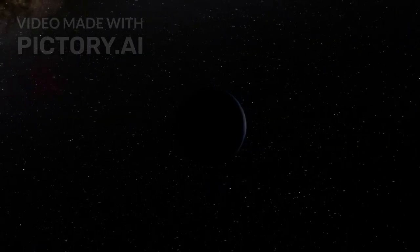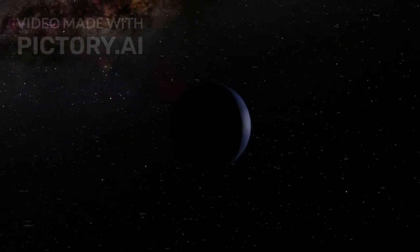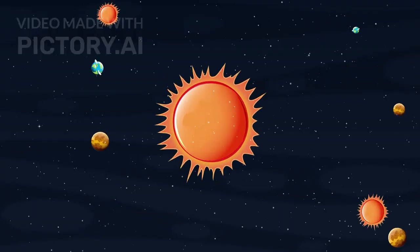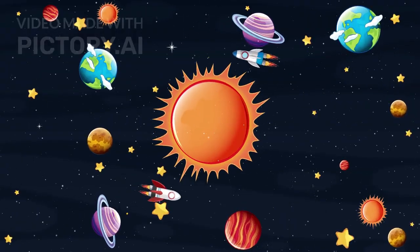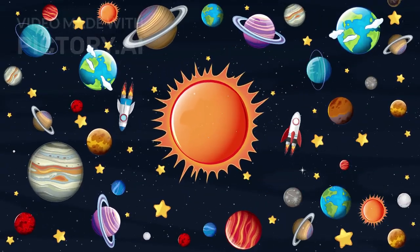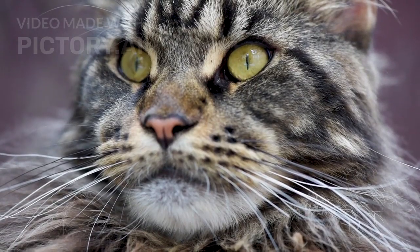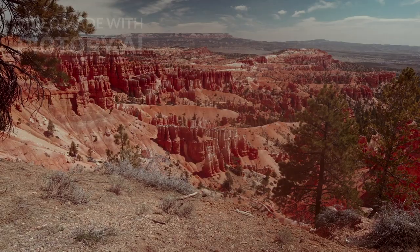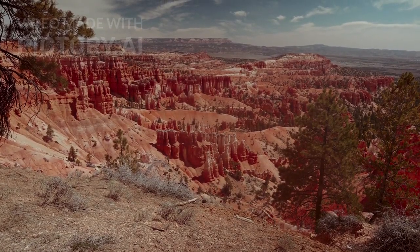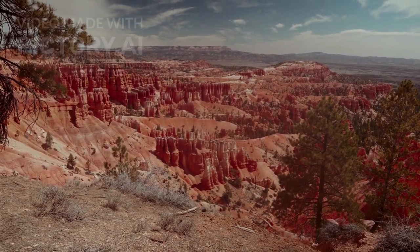Outside, tidal forces from its giant moon Charon add another layer. Pluto and Charon form a rare dual-planet system, locked in a gravitational dance that stirs their interiors. This interaction could generate enough friction to help keep Pluto's ocean alive. And Charon is no less mysterious. Its enormous canyons stretch across its surface, hinting at past tectonic activity.